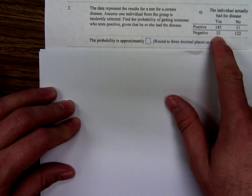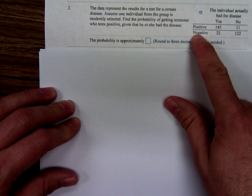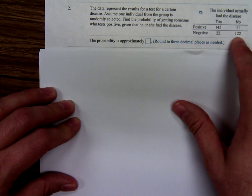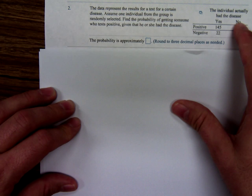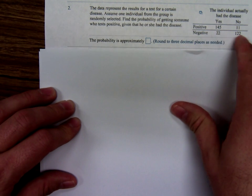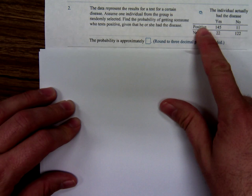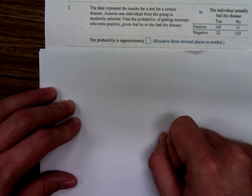Similarly, 22 people had the disease but tested negative. 122 didn't have the disease and tested negative. Those are the ones that should be testing yes or positive if they actually had the disease. It should test negative if they didn't have the disease.